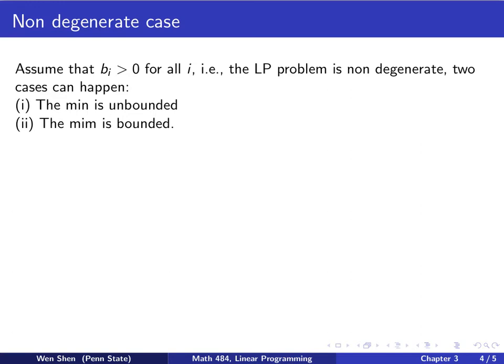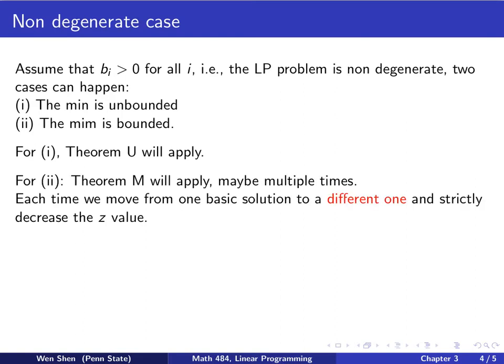The degenerate case could make the simplex algorithm more complicated. Let's consider the simple case that is non-degenerate. That is, we assume that all the b_i's, the right-hand side of the canonical form, are strictly bigger than 0. So nobody is equal to 0. Then two things would happen. One is the minimum is unbounded, and the second is the minimum is bounded.